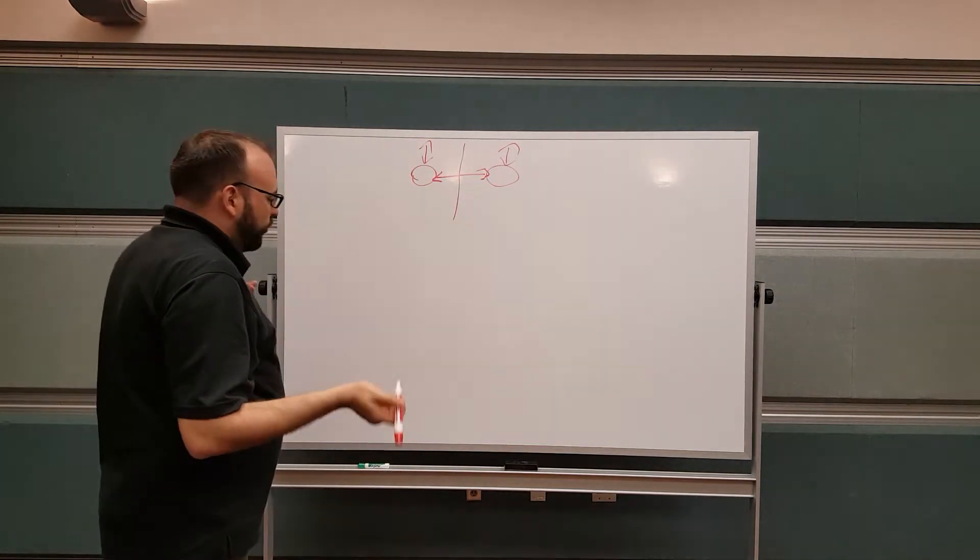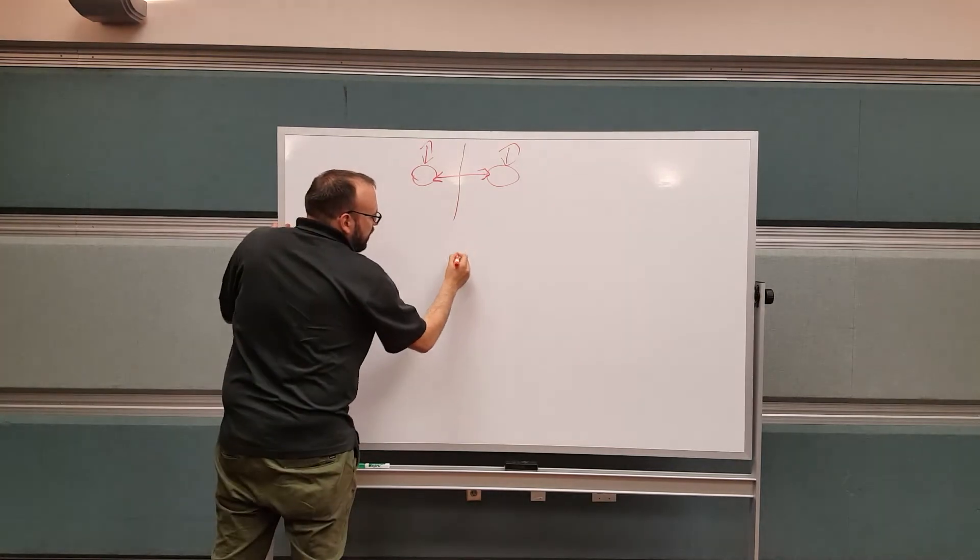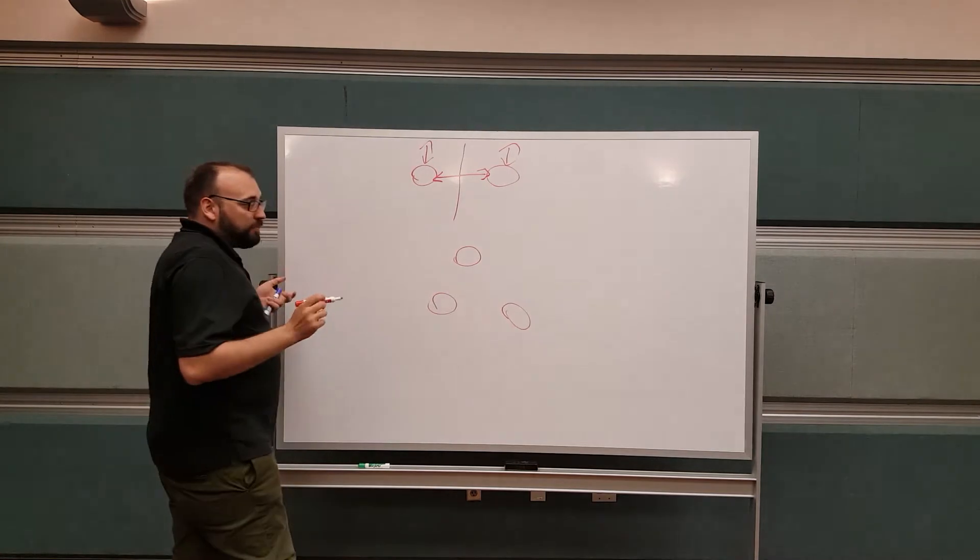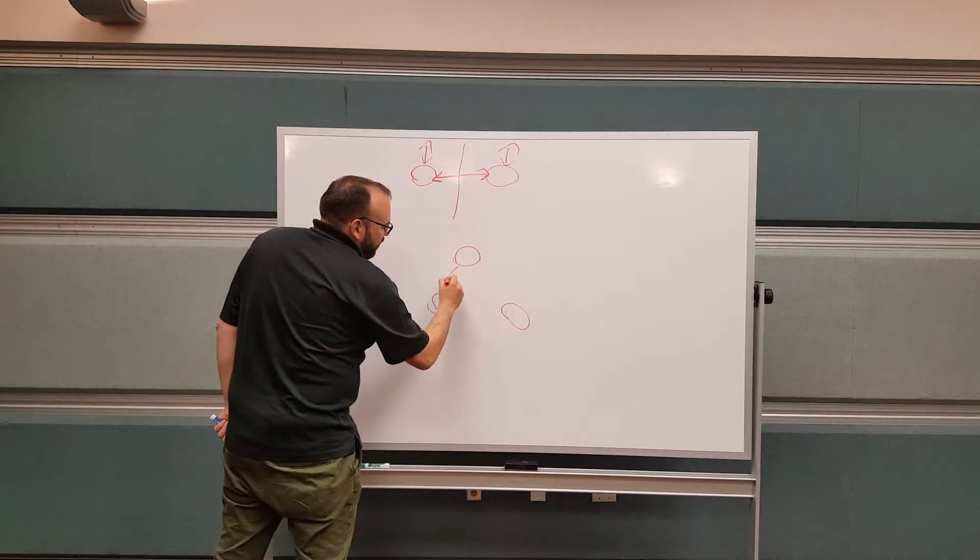So why do we need three nodes? It's very simple, to add quorum to your database cluster. So what happens if in this case, for example, and they're communicating, of course, right?